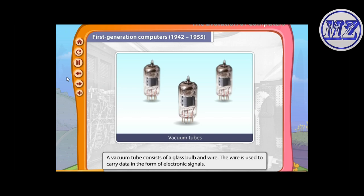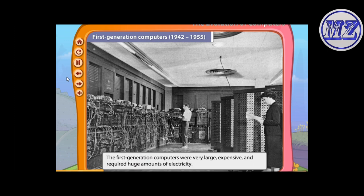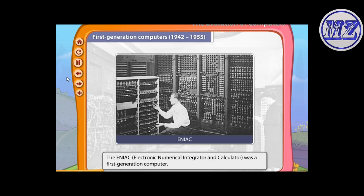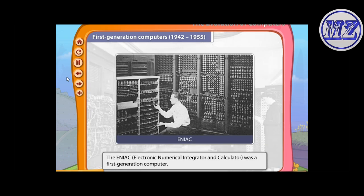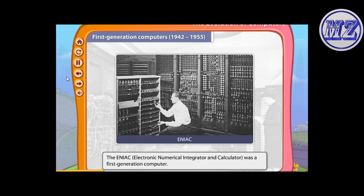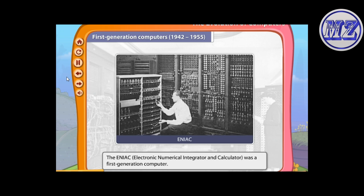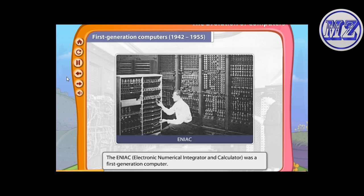Data was carried in the form of electronic signals. The first generation computers were very large, expensive, and required a huge amount of electricity. The ENIAC, or the Electronic Numerical Integrator and Calculator, was a first generation computer.